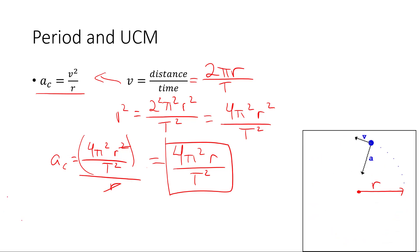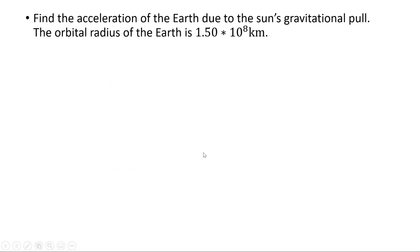So we can use this if we don't have the speed given explicitly, then we don't have to re-derive the distance over time. So let's find the acceleration of the Earth due to the sun's gravitational pull. The orbital radius of Earth is 1.50 times 10 to the 8 kilometers. So r is that, we're going to write it in meters, 1.50 times 10 to the... well, there are 10 to the 3 meters in a kilometer, so times 10 to the 11 meters.